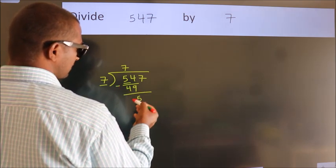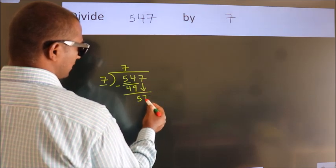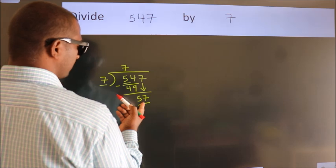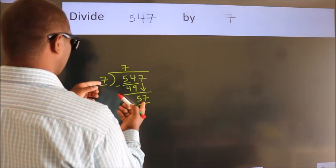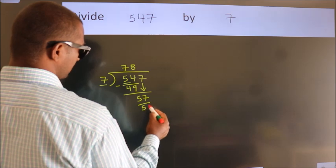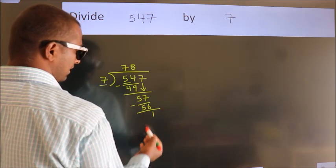After this, let's bring down the beside number. So 7 down. So 57. A number close to 57 in the 7 table is 7 times 8 is 56. Now we subtract, we get 1.